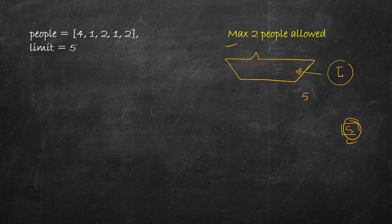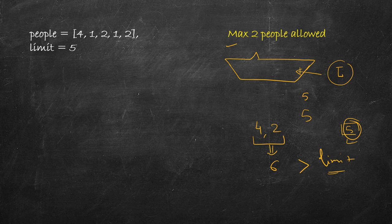Or if there are people of weights 4 and 2 and the limit is 5, putting both together gives a total of 6, which exceeds the limit. In this problem, we want to find the minimum number of boats required. The maximum would be putting one person in each boat — all people in separate boats.